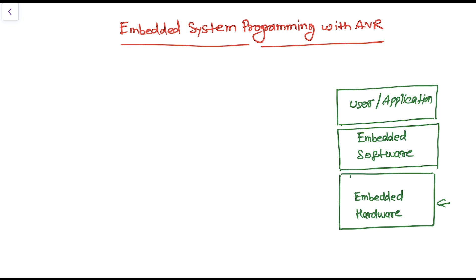In embedded system programming there are three main components. The first one is embedded hardware, then we have embedded software, and finally we have a user and the application running on top of the embedded hardware. The embedded software resides on top of the embedded hardware, and the user application runs on these two parts.